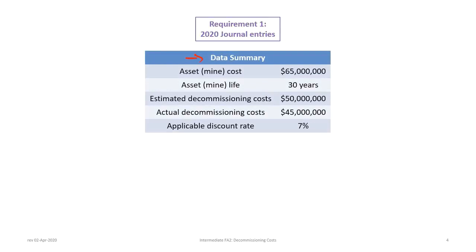A good place to start is with the summary of the data in this example. The company purchases a mine with a value of $65 million over a lifespan determined to be 30 years. At the time of acquisition, the estimated decommissioning costs required to restore the site back to acceptable conditions will be $50 million, with actual decommissioning costs of $45 million in the year 2050. The applicable discount rate used is 7%, because these future decommissioning costs require present value discounting, as with bonds, notes, and leases.